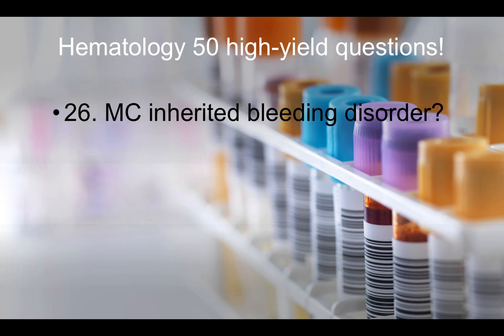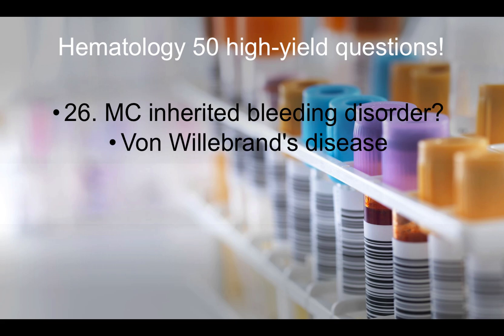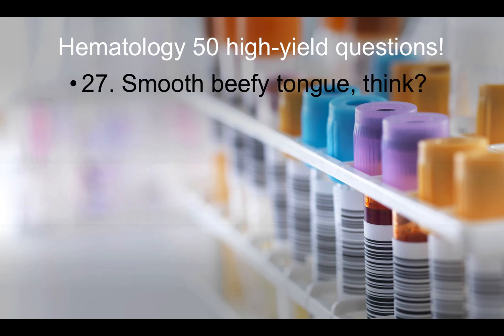Question twenty-six: Most common inherited bleeding disorder — very commonly tested during your clinical year. The answer is von Willebrand disease. Question twenty-seven: A smooth, beefy tongue should make you think of B12 deficiency in vegan patients.